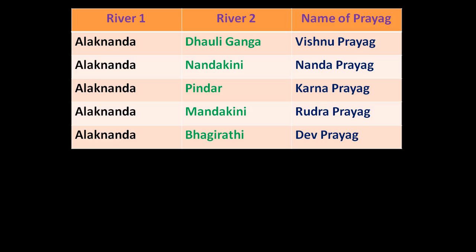As we all know, the Ganga has two head streams — the Alaknanda and the Bhagirathi — and they meet at Dev Prayag. From Dev Prayag onwards it is known as the Ganga.